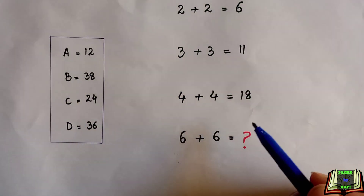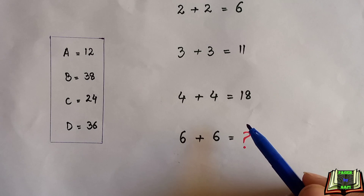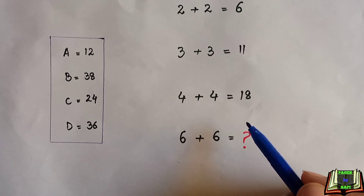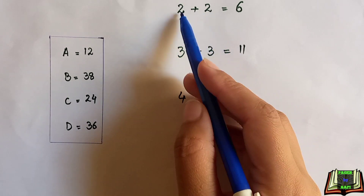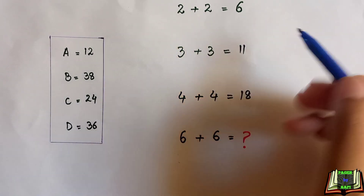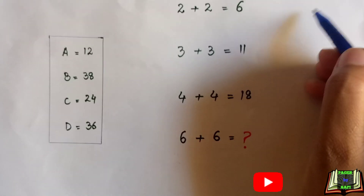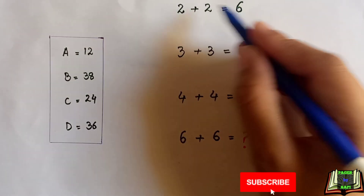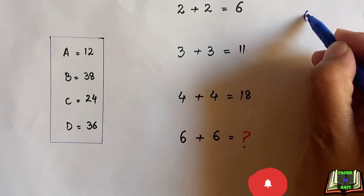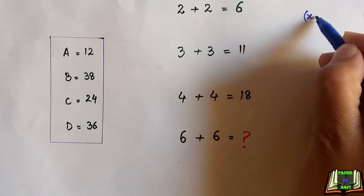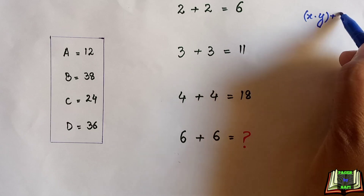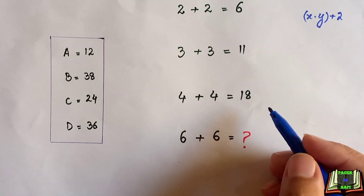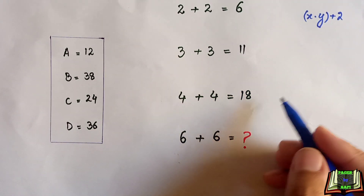First of all, we will look for a pattern, because we know that 2 plus 2 is not equal to 6, and 3 plus 3 is not equal to 11 — but there is some pattern being used. If we suppose the first value as x and the second value as y, and multiply these two values together, then add 2...